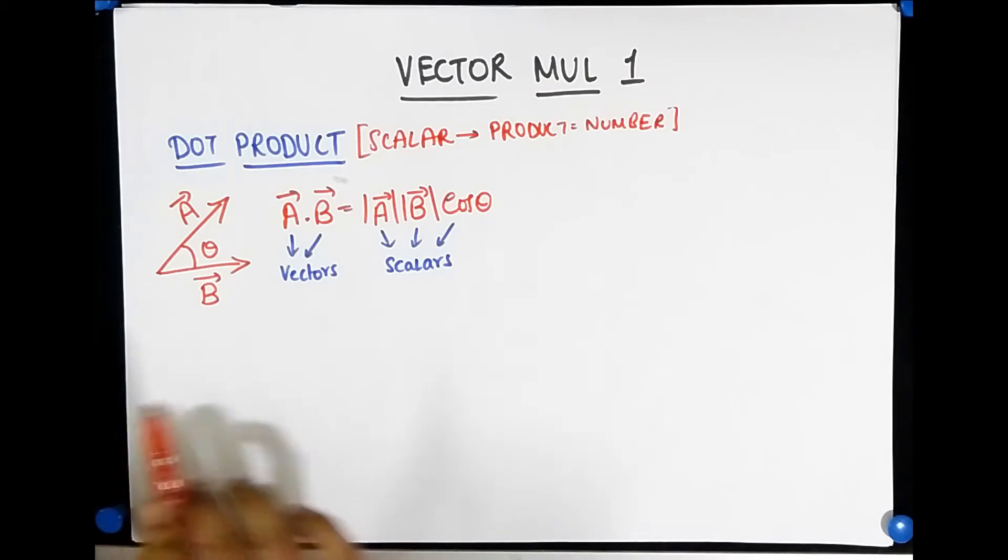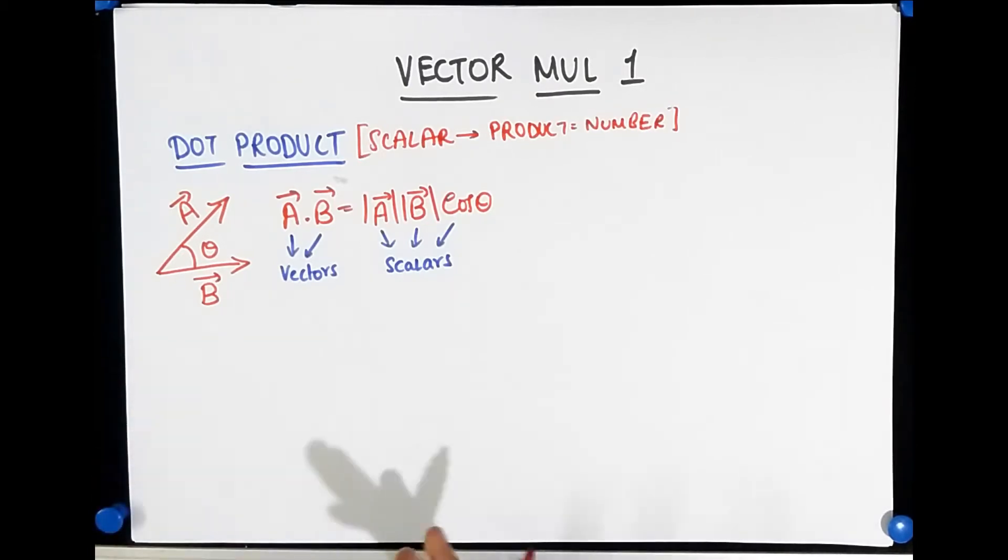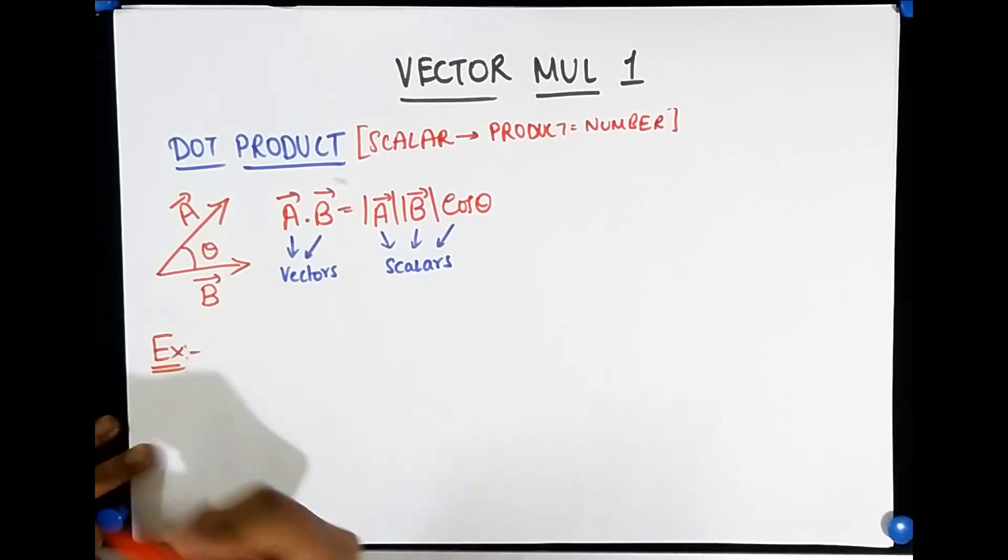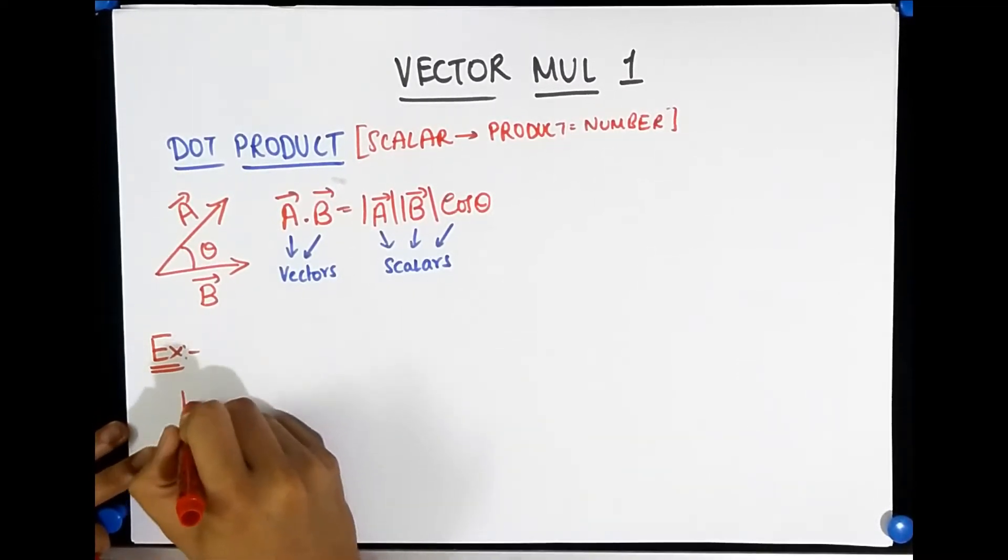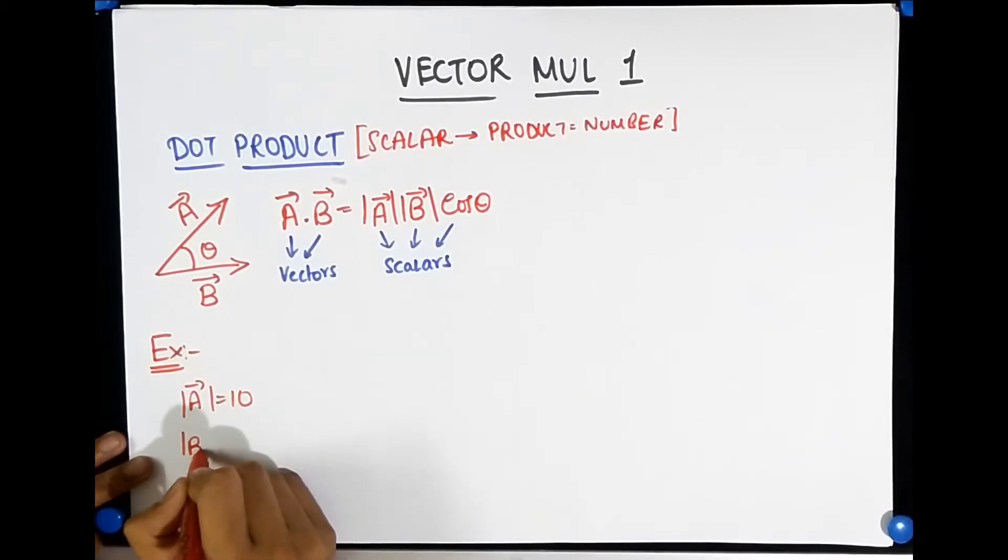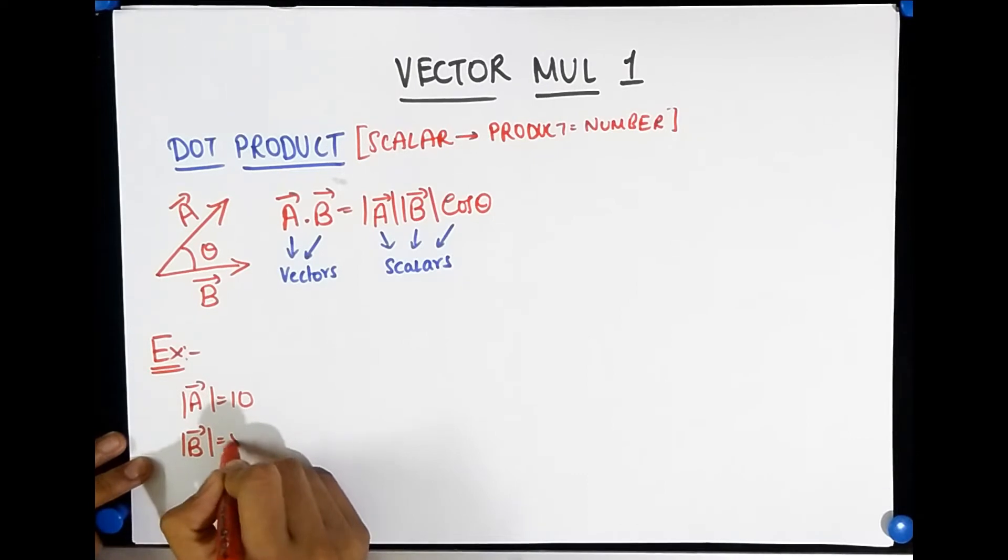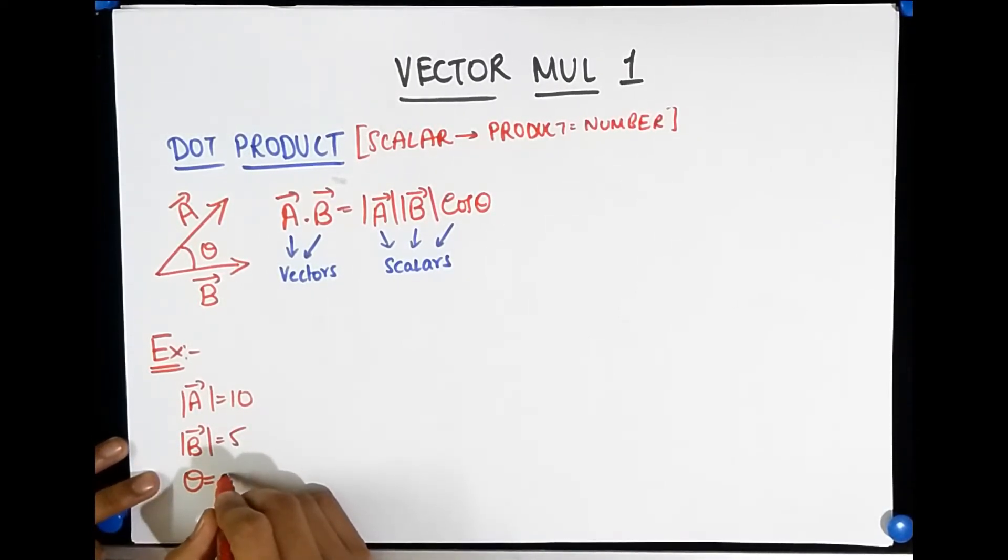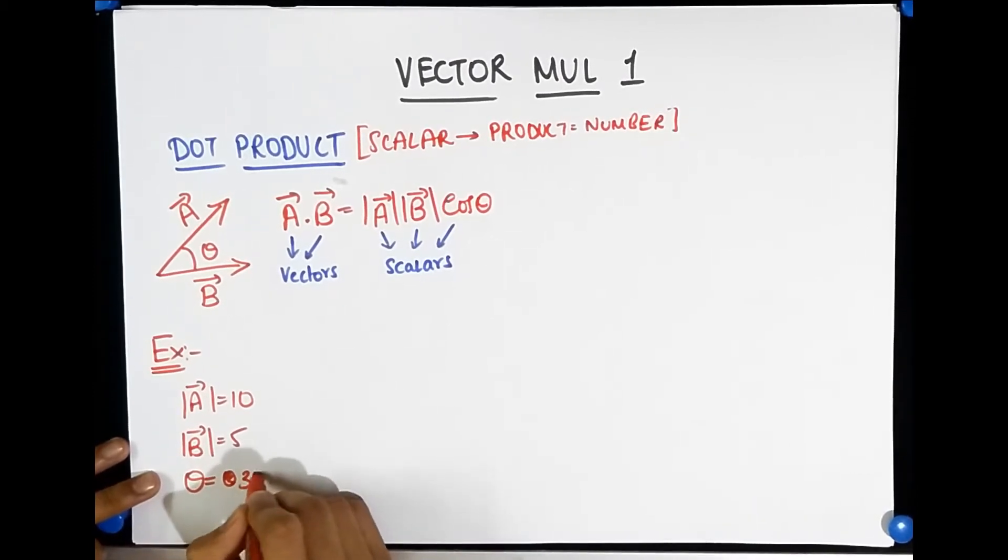Let's try and understand a little bit more about what dot product tells you. What's the meaning of it? To understand that, let's take an example. Suppose magnitude of A is 10 units and magnitude of B is 5 units and let's say the angle between them is 30 degrees.